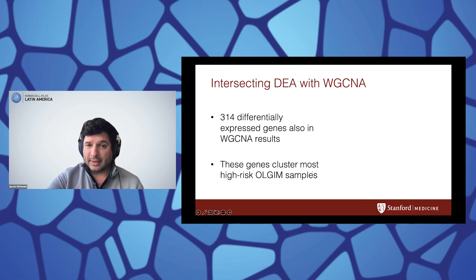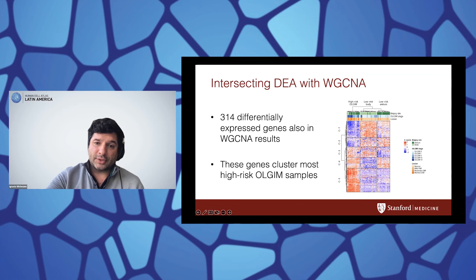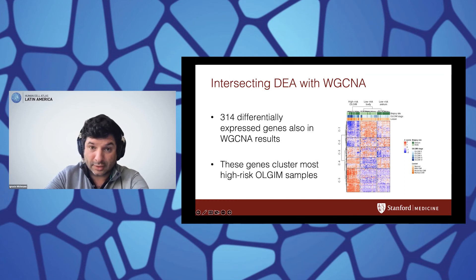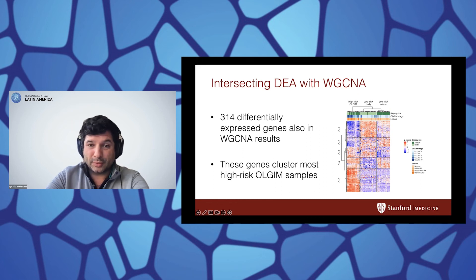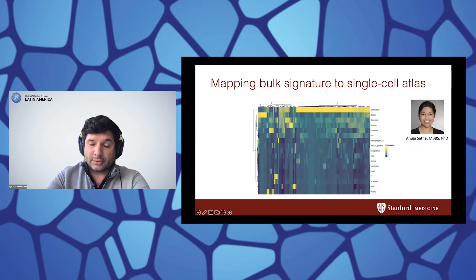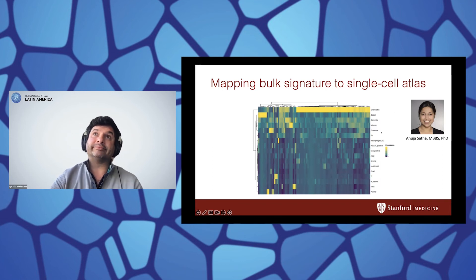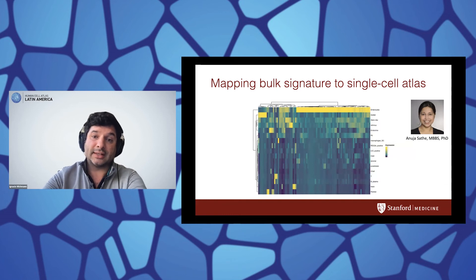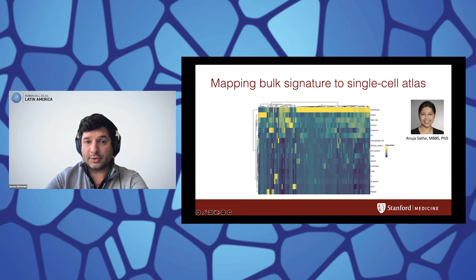These genes cluster most of the high-risk OLGIM samples in a very strong signal: genes down-regulated in high-risk and genes up-regulated in high-risk, regardless of whether samples were from the corpus or antrum. Among these, the C5 cluster had the strongest and most consistent signal. We then mapped these genes to specific cell types using a gastric preneoplasia and gastric cancer cell atlas integrating 19 different samples from studies from the lab and additional sources. The genes from the C5 cluster actually map to enterocytes, which are intestinal cells — so we are capturing the intestinal metaplasia using this bulk data. They also map to goblet cells and show increased signal mapping to stem-like cells and endocrine cells, which are known to retain some stem-like cell properties.